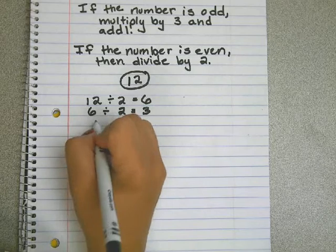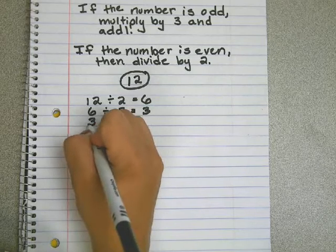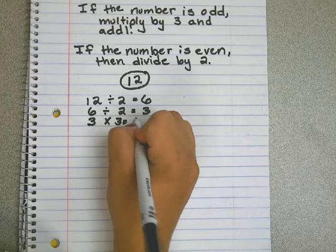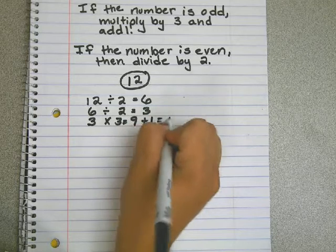Three is odd. Therefore, we multiply three by three and add one, which equals ten.